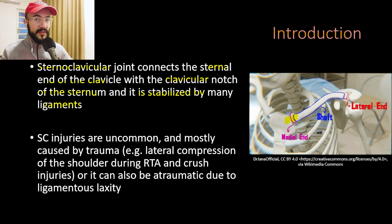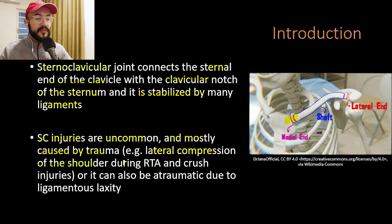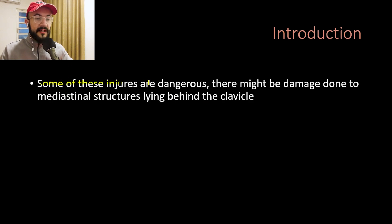When there is injury to the sternoclavicular joint, all of those ligaments will also be injured. Sternoclavicular joint injuries are uncommon and mostly caused by trauma — for example, lateral compression of the shoulder during a road traffic accident. SC joint injuries can also be atraumatic, meaning they occur without trauma. Some of these injuries are dangerous, as there may be damage to mediastinal structures lying behind the clavicle.